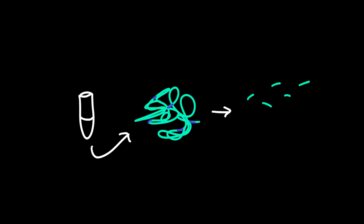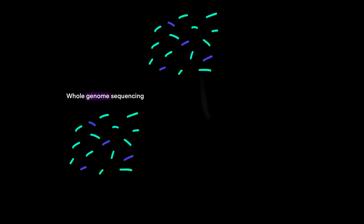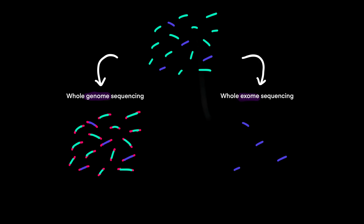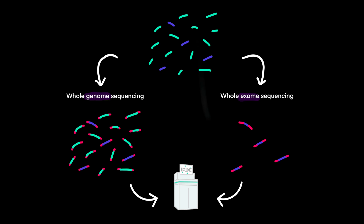In terms of how these tests actually work, whole genome sequencing and whole exome sequencing are quite similar. First, DNA is isolated from the sample, then it's broken into little pieces. In whole genome sequencing, all DNA fragments of the right size get little ends called adapters attached to them so they can stick to the flow cell in the sequencing machine. In whole exome sequencing, the exons — or regions that code for genes — are isolated from the DNA fragments and then have adapters attached to them. Thereafter, the sequencing process is nearly identical.